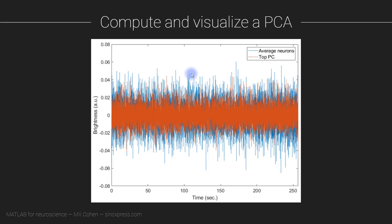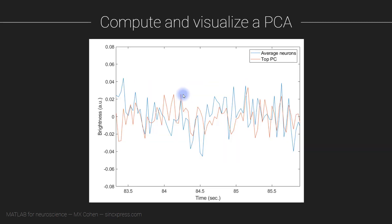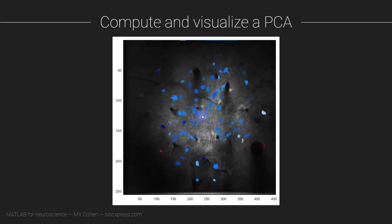After applying the PCA, we can plot the first principal component time series and the average time series over all of the clusters. Zooming in, we can see that these two time series are pretty similar in some cases, though certainly not identical. This tells us that our population of cells has a lot of activity in common over the four-minute recording period. Next, we will visualize the principal component weightings on top of the average image, which is like an anatomical map.